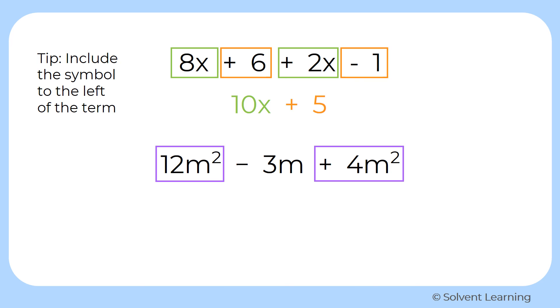Which means I'm just adding the coefficient parts together. So 12m squared plus 4m squared will give me 16m squared.